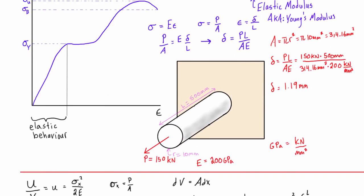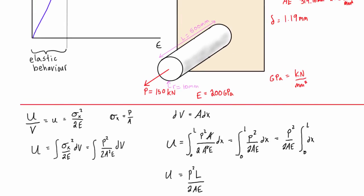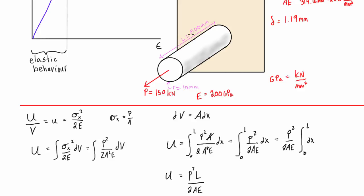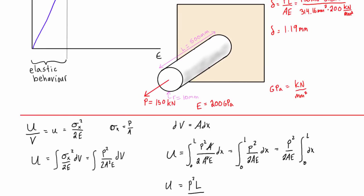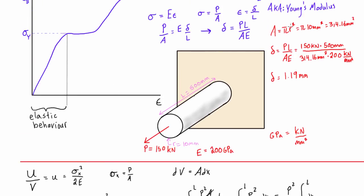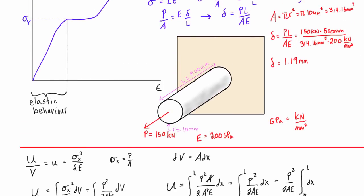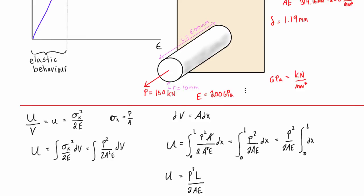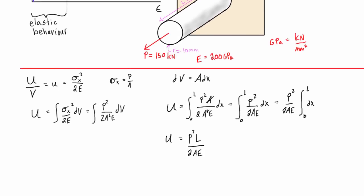We have, there we go, we have some things that we need, right? So we need, we have P, we have L, we have area, I think we already calculated that up here, yeah, the cross-sectional area, and we also have E, 200 gigapascals. So let's fill that stuff all in.